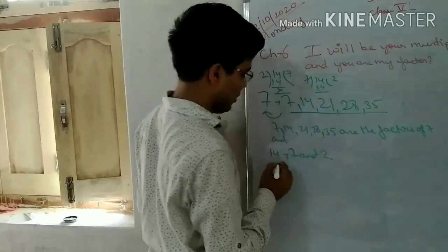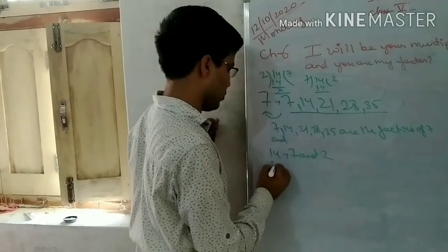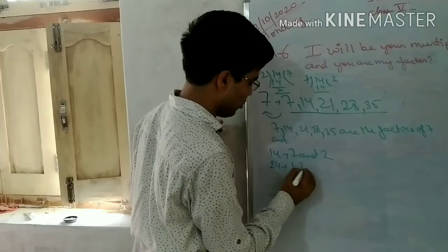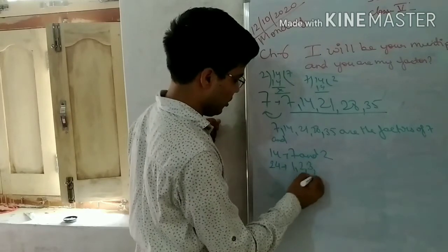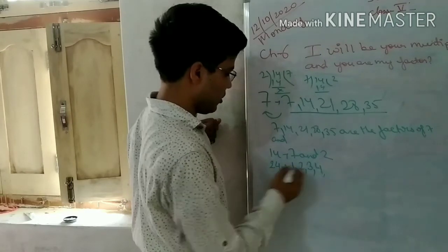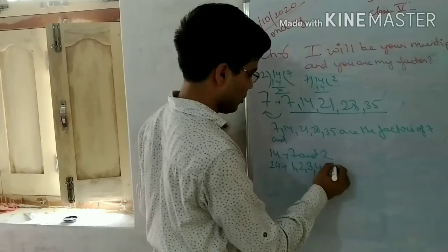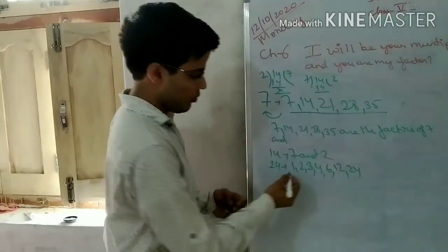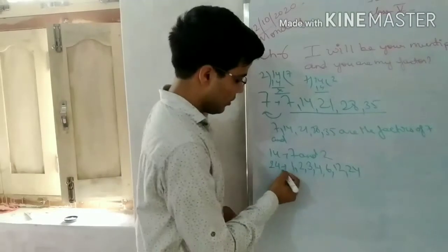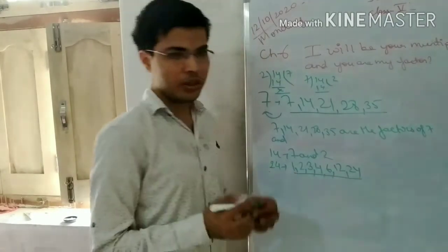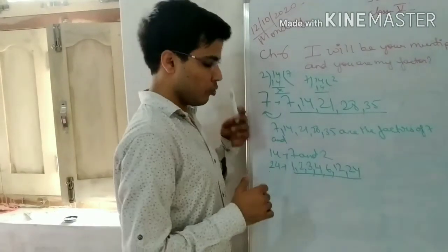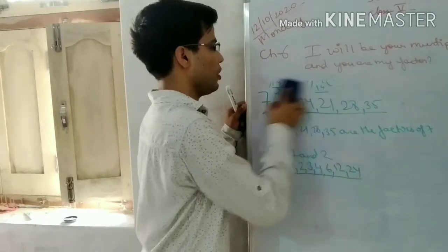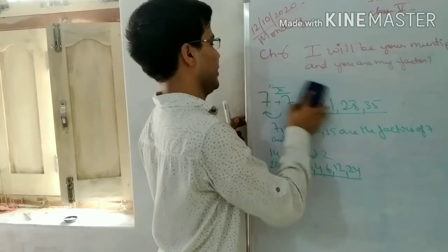Same way, we will do 24. We will get 1, 2, 3, 4, 6, 12, and 24 as the factors of 24. Because if you divide this number with any of these numbers, the remainder will be 0. So to find the factor, we first check which numbers that number can be divided by.